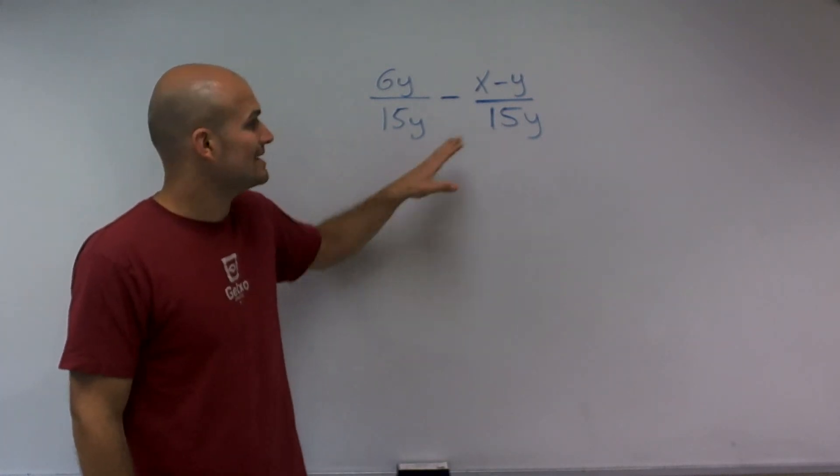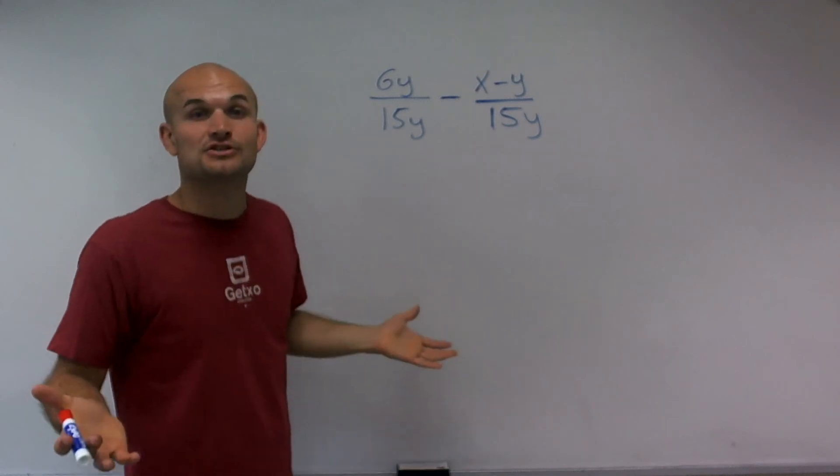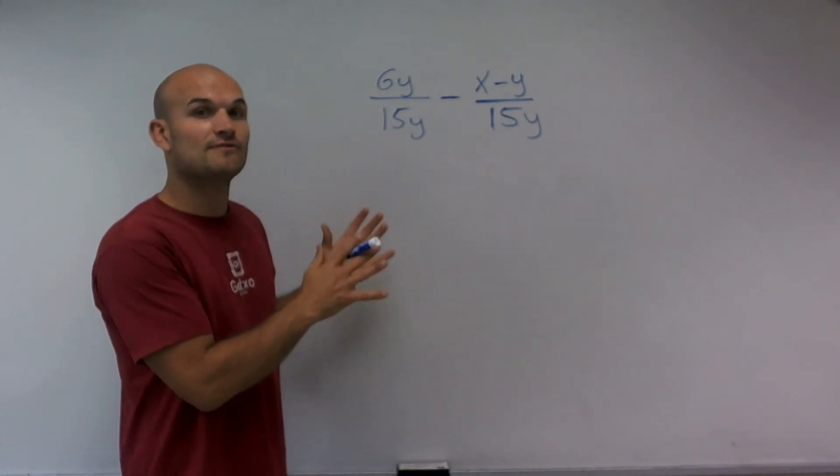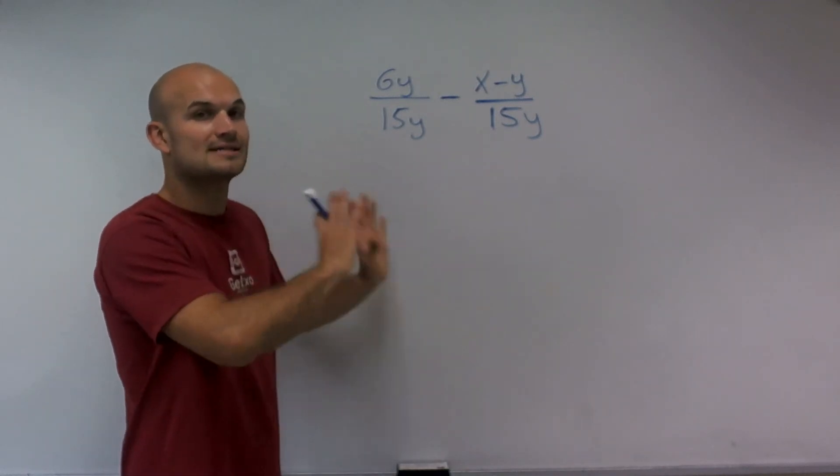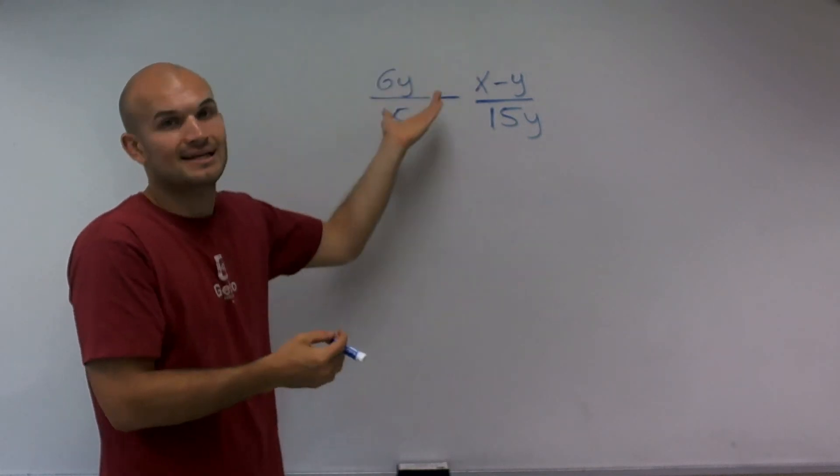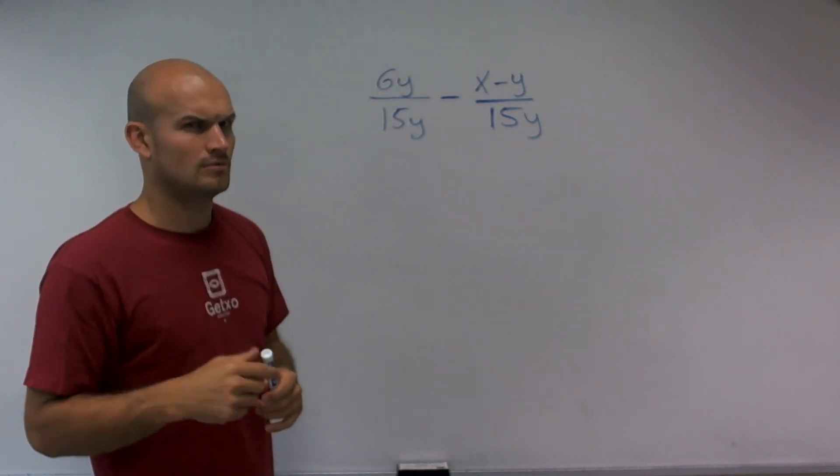So it's very good that right now I have them as the same denominator, meaning I don't need to do anything. I know that whenever I have two fractions with the same denominator, I just subtract the numerators and keep the denominator the same, right?